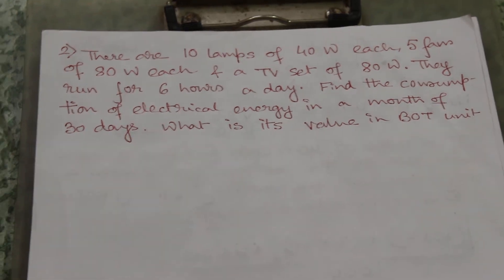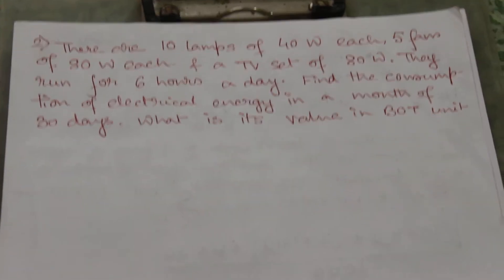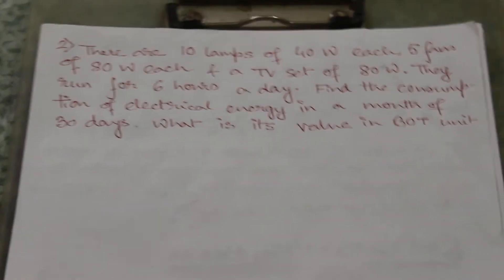They run for 6 hours a day. Find the consumption of electrical energy in a month of 30 days. What is the value of BOT unit?